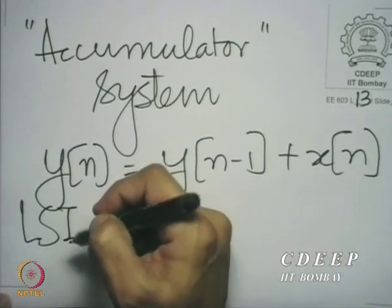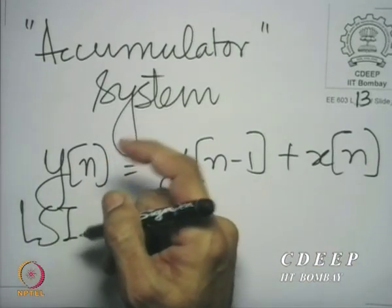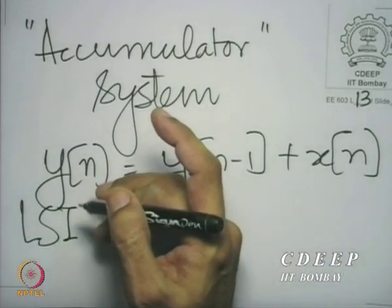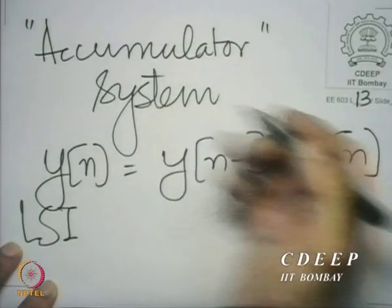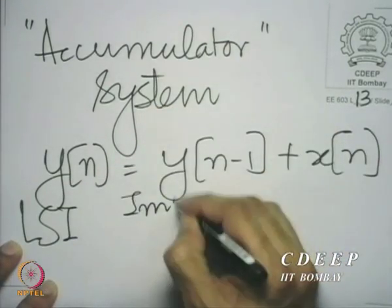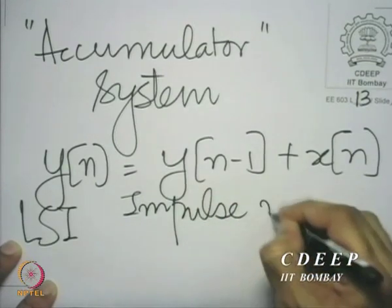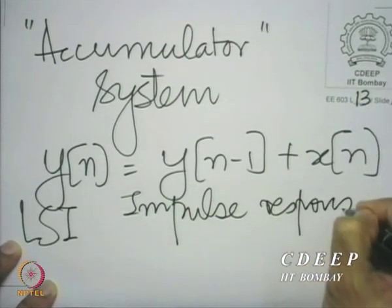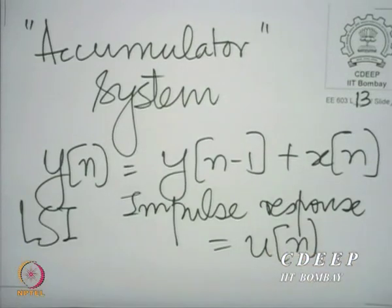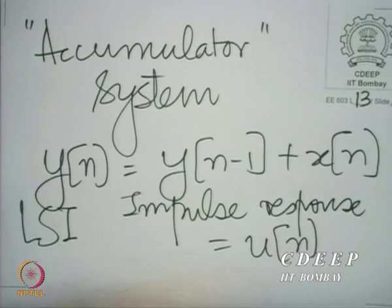This can be looked upon as an LSI system, if you treat the accumulator as having operated all the way from minus infinity. The impulse response of this LSI system is u[n] — that is easily seen. Because if an impulse is given to an accumulator, the output is 1 starting from 0 onwards. The question is: would the accumulator have a frequency response? That is another way to reframe the same question.